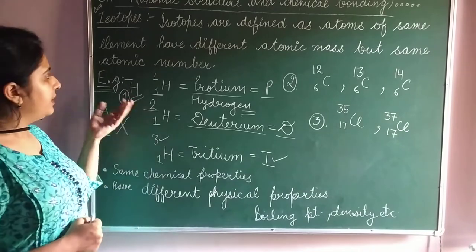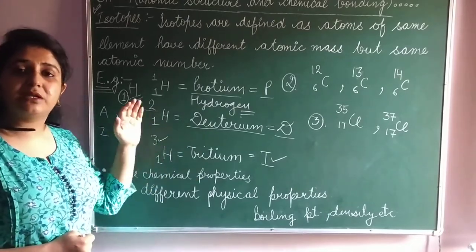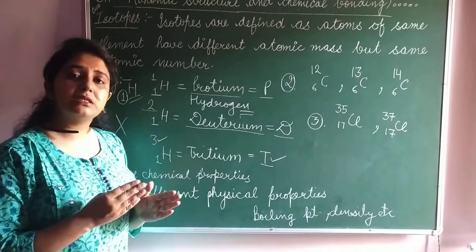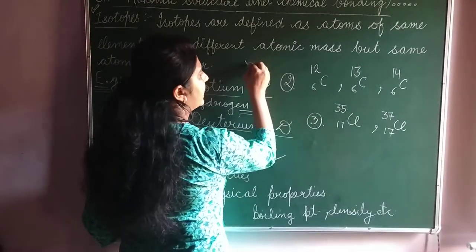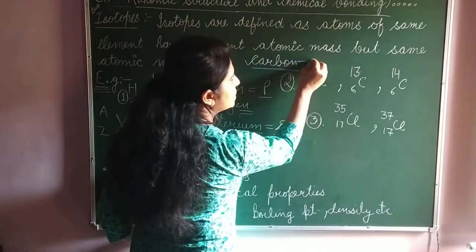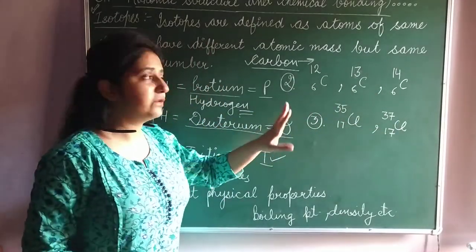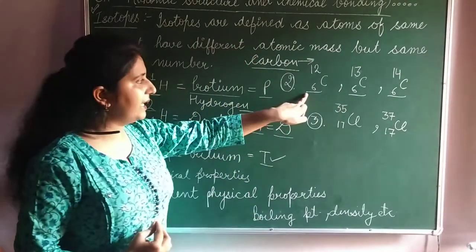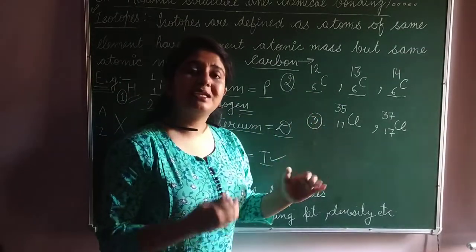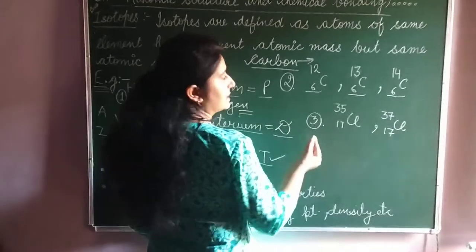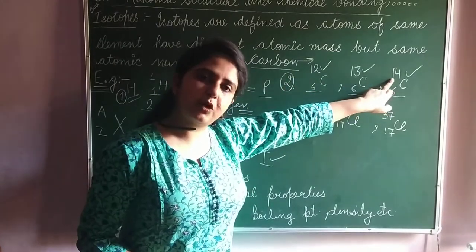Many elements in the periodic table contain isotopes — they have the same atomic numbers but different atomic masses. Let's discuss another example, that of carbon. Carbon also contains three different atoms; we can say it has three isotopes with the same atomic number 6, 6, and 6, but different atomic masses: 12, 13, and 14.